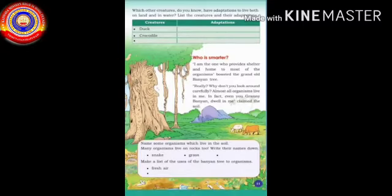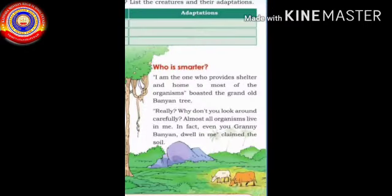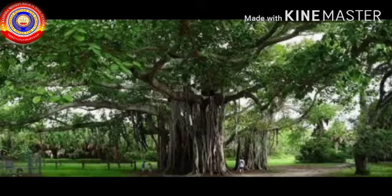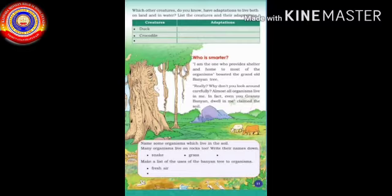Shall we start the class? In page number 11 of your textbook, we can see the picture of a banyan tree. This grand banyan tree is saying something — what is that, children? Yes: 'I am the one who provides shelter and home to most of the organisms.'